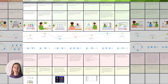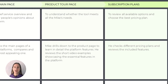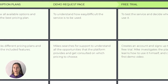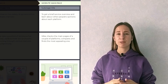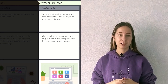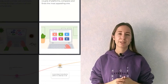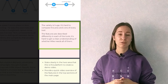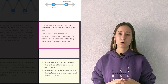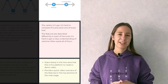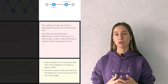During this phase, Mike navigates through different website pages – main page, product tour page, subscription plans, demo requests, and free trial pages. Before finally landing on my website, Mike walks through the main pages of different platforms, compares them, trying to find the most suitable one. But it becomes quite hard to distinguish the pros and cons of every tool, and it's not very clear whether Mike needs certain features or not. That's why in the idea section, I make several suggestions on the website's main page design and content.